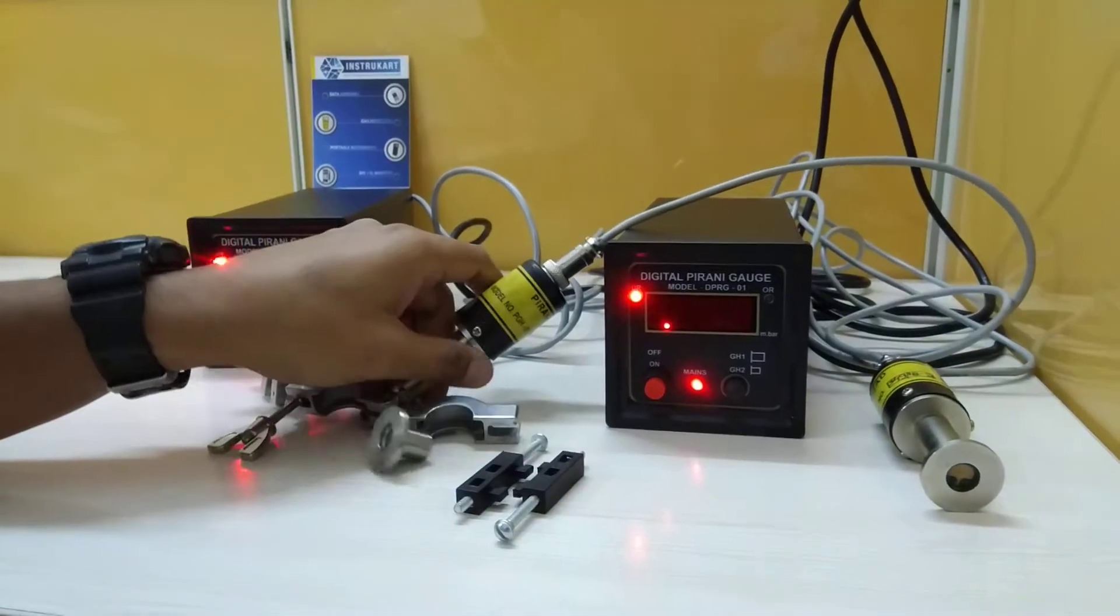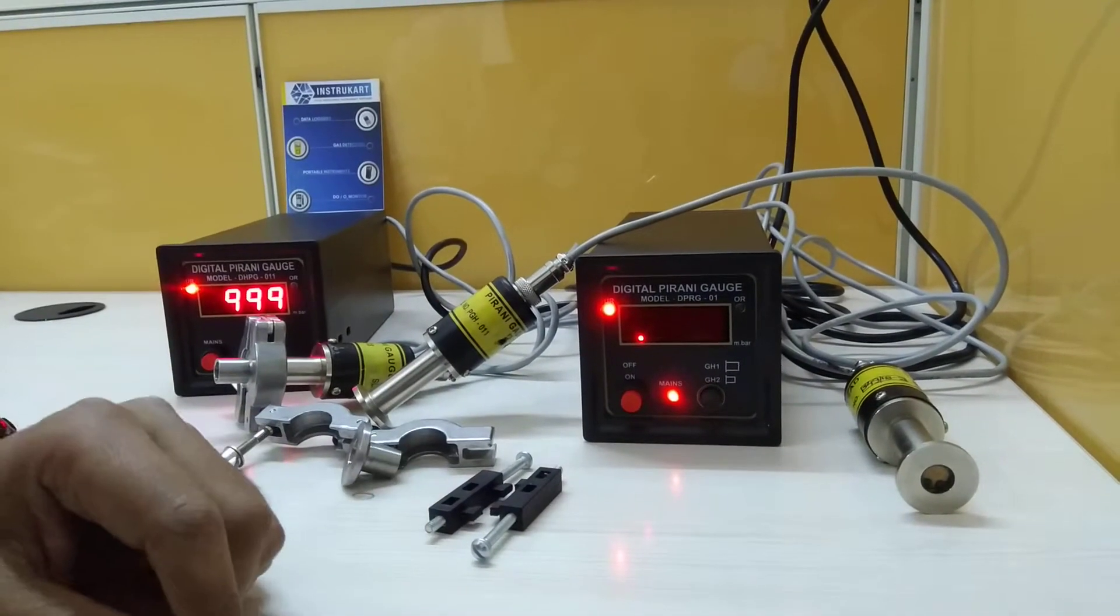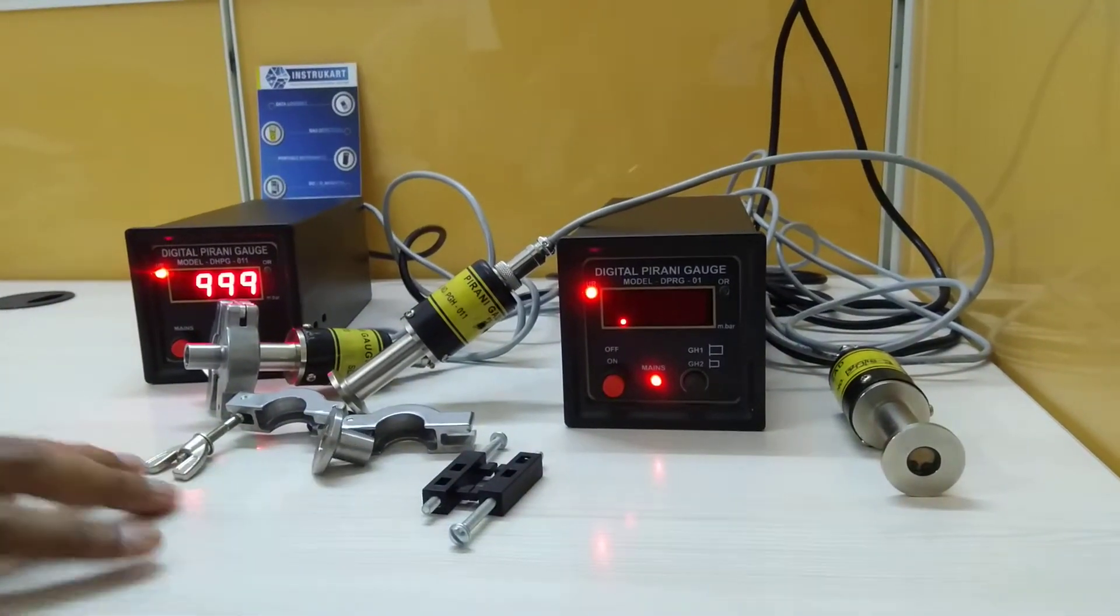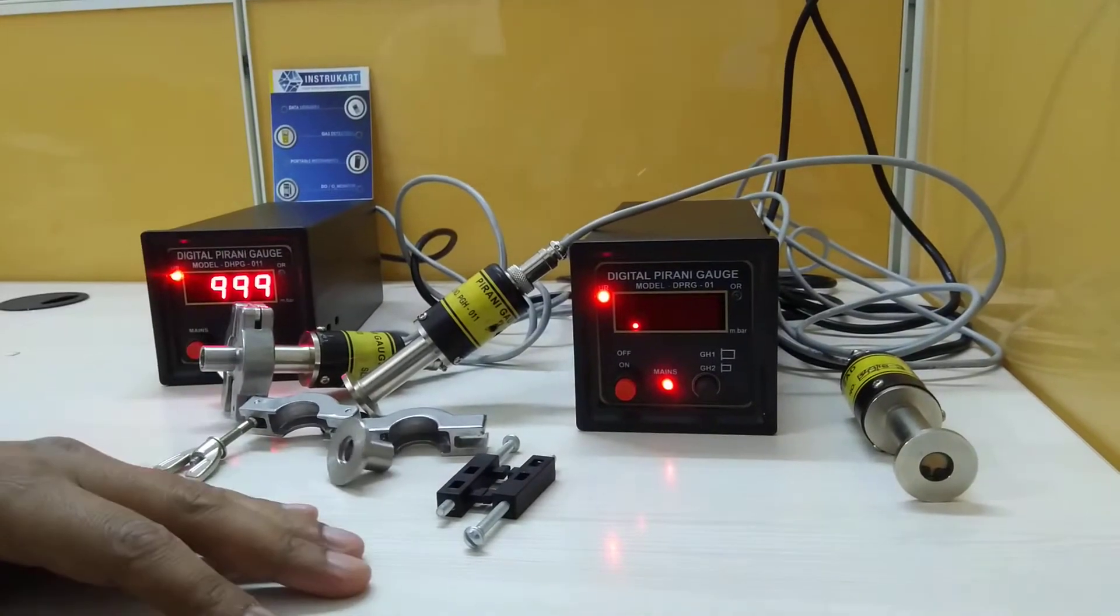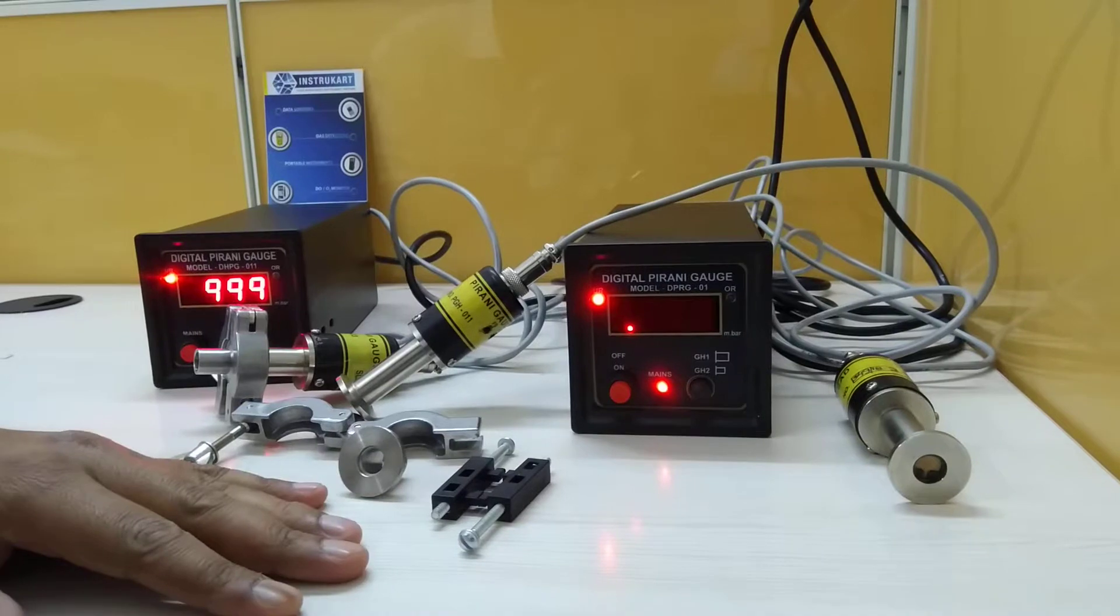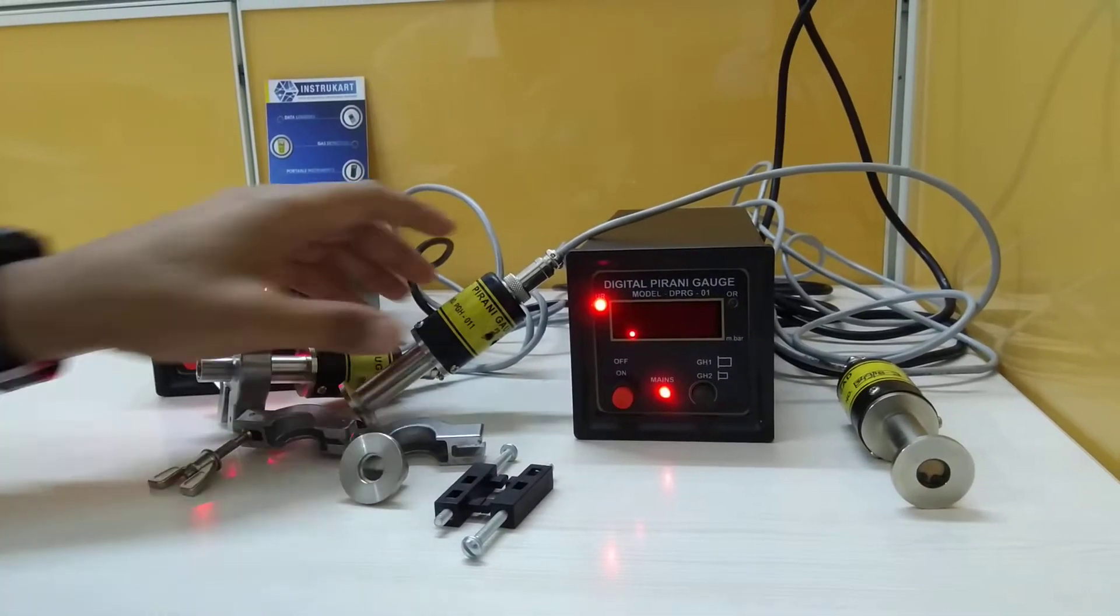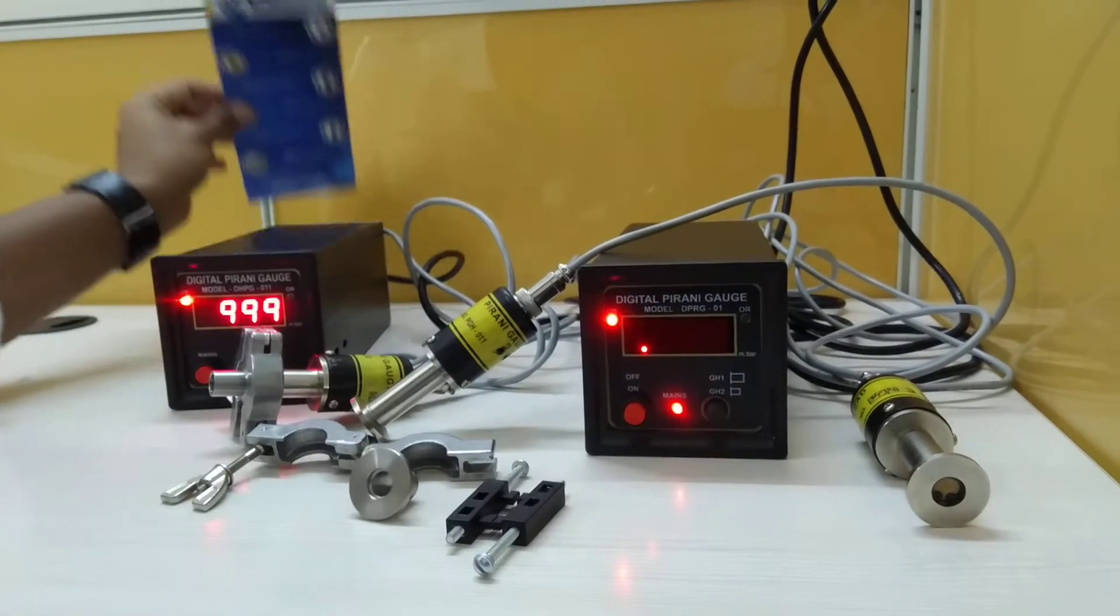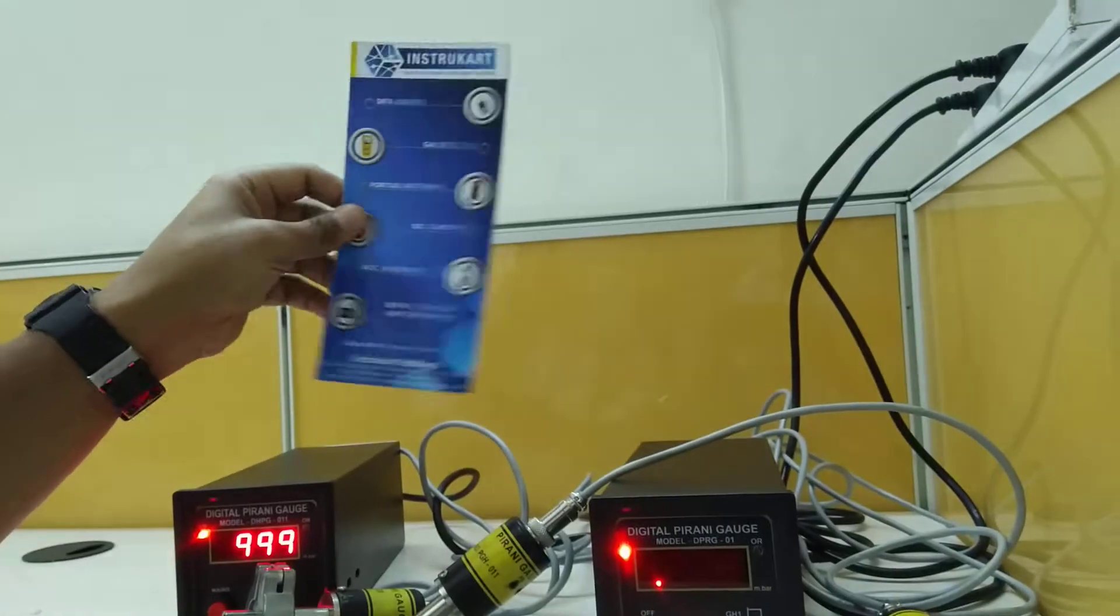This particular Pirani gauge is widely used in vacuum pumps and refrigeration areas. This is basically for high vacuum applications.